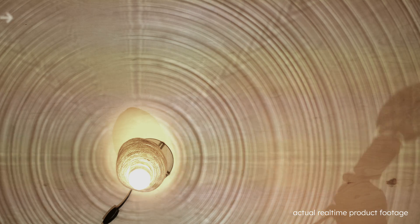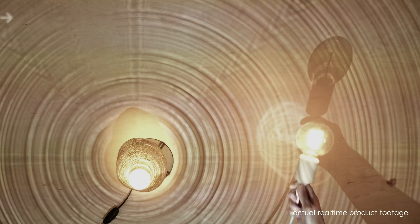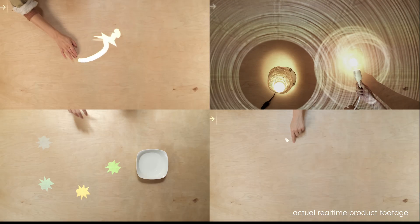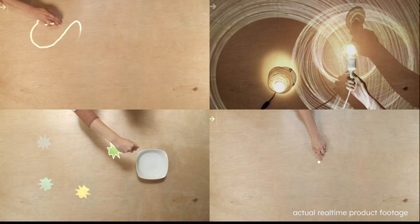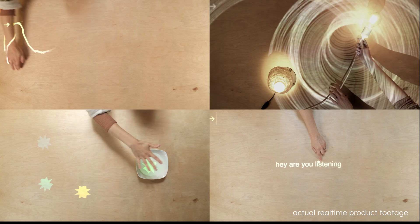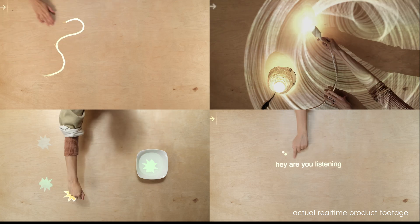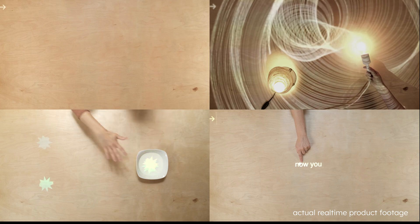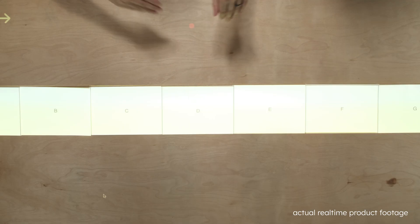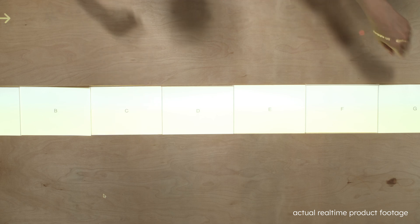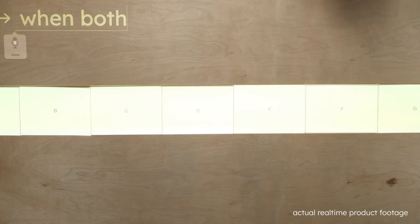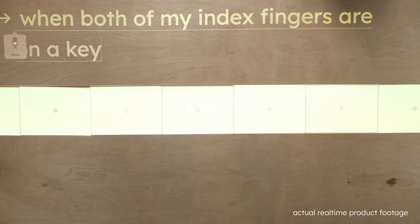But just how many ways that we interact with the world could it really use? What is it? When both of my index fingers are on a key, drop the octave.